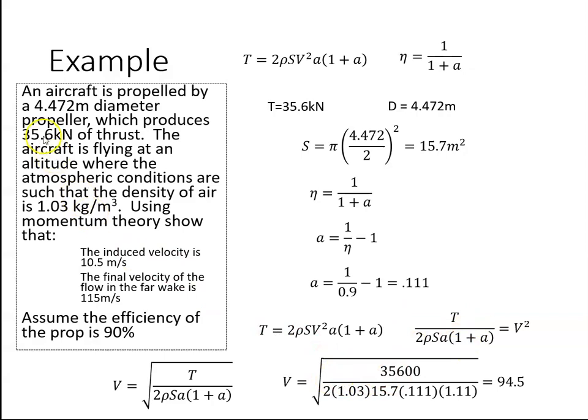So the thrust was 35,600. 2 is just 2. Rho is 1.03. S is 15.7, which we calculated. A is 0.111 and 1 plus A is 1.111. So that works out to be 94.5 meters per second.